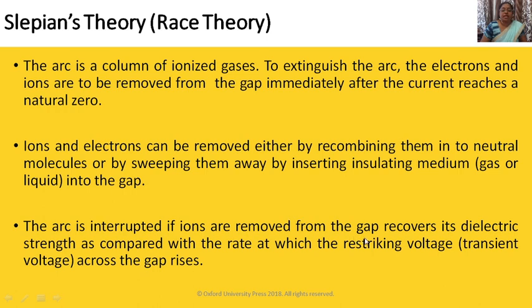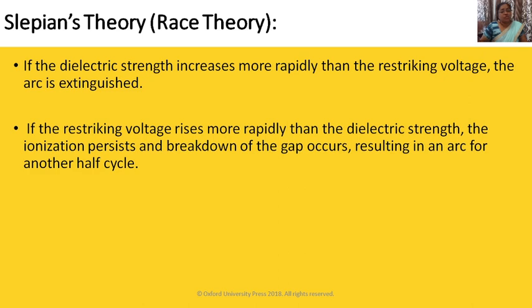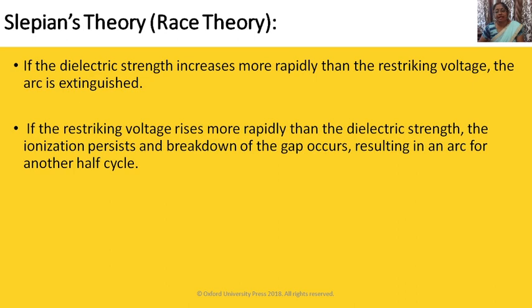If the ions are removed from the gap, it recovers dielectric strength compared to the rate at which the restriking transient voltage across the gap rises. If the dielectric strength increases more rapidly than the restriking voltage, the arc is extinguished. If the restriking voltage rises more rapidly than the dielectric strength — noting that different insulating media like air, vacuum, and SF6 have different dielectric strengths — the ionization persists and breakdown of the gap occurs, resulting in an arc for another half cycle.